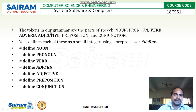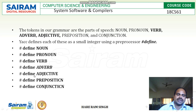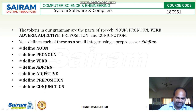The tokens in our grammar are the parts of speech. The different tokens can be noun, pronoun, verb, adverb, adjective, preposition, and conjunction. YACC defines each of these as a small integer using a preprocessor hash define — for example, hash define noun, hash define pronoun, hash define verb, hash define adverb, hash define adjective, hash define preposition, hash define conjunction. The lexer scans the input file and if any input matches these tokens, it sends that value to the parser.